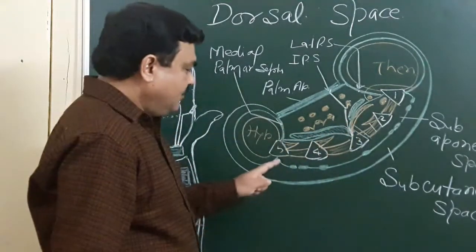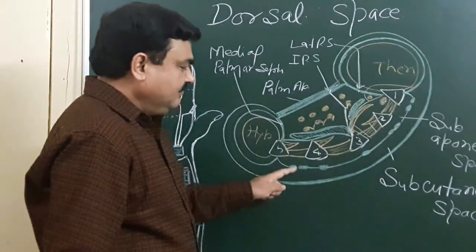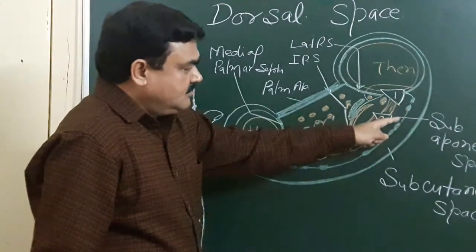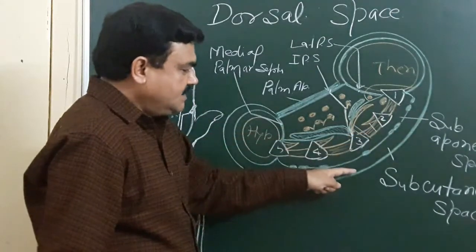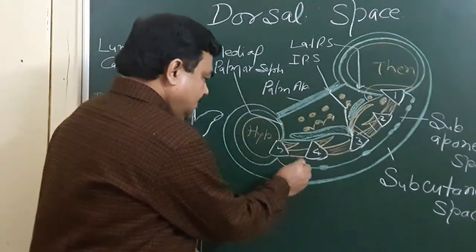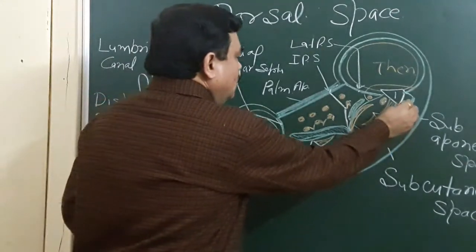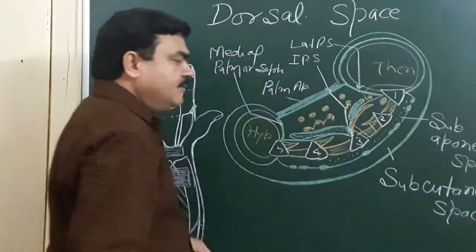Posteriorly, it is bounded by the aponeuroses formed by flattened tendons and the skin. This subaponeurotic space is filled with loose connective tissue.